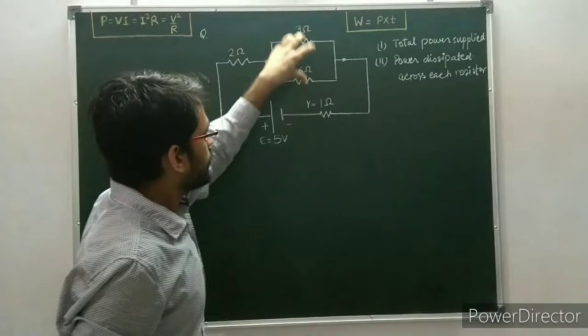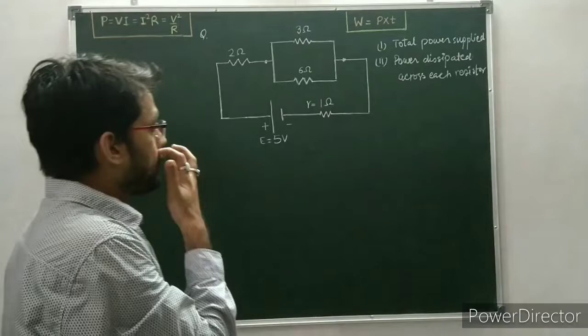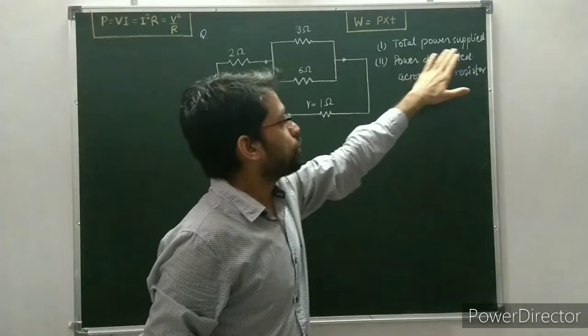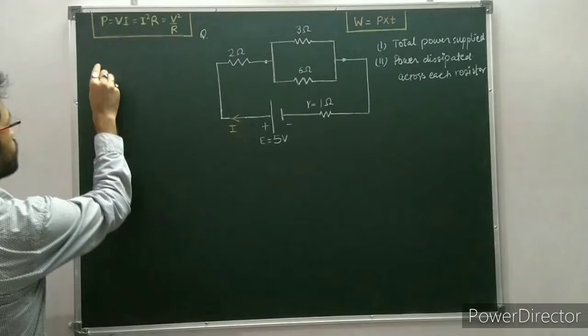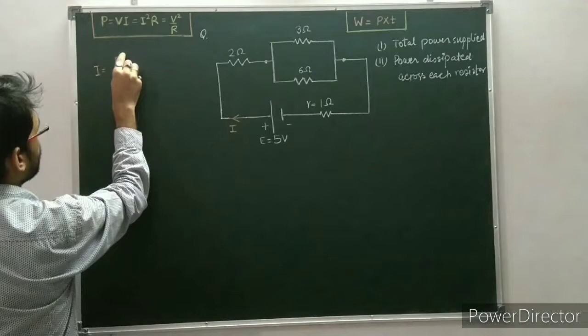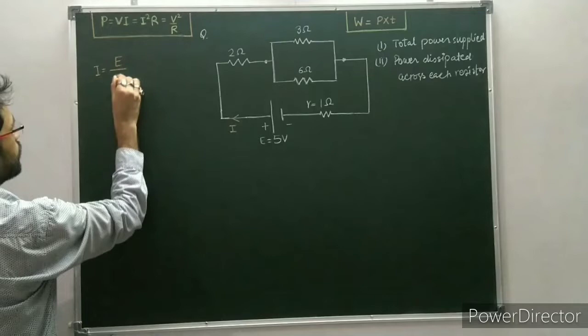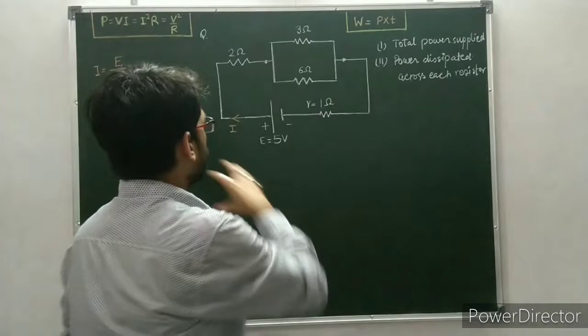To calculate the total power supplied, we have to calculate the current drawn from the cell. The current drawn from the cell can be given as the EMF of the cell divided by the total equivalent resistance of the circuit, R_eq.